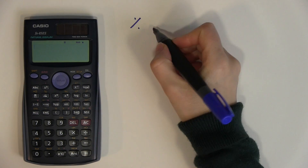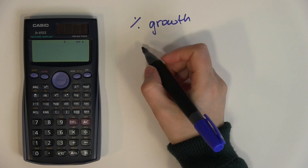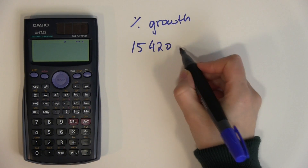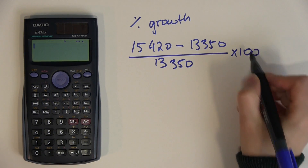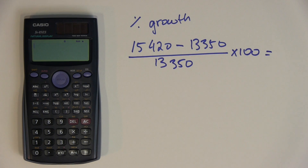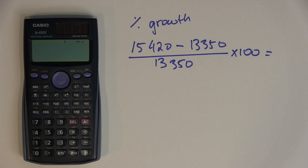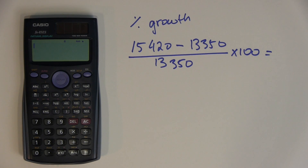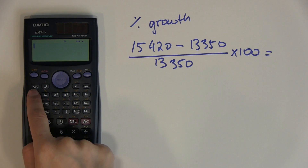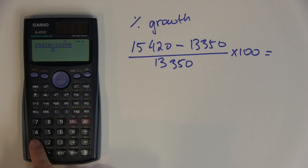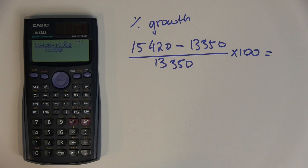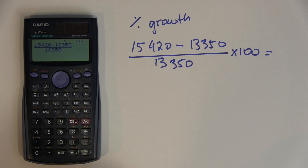Now suppose you need to calculate percentage growth. For example, you want to calculate 15,420 minus 13,350 over 13,350, times 100, to get the exact percentage growth. Instead of going step by step, with the scientific calculator you type the sequence once and get the answer right away. Since there is a fraction, I press the fraction button and type 15,420 minus 13,350 in the numerator, then move down to the denominator and type 13,350.